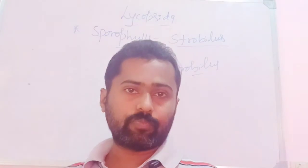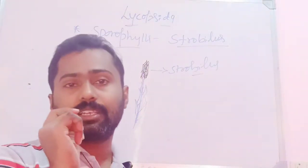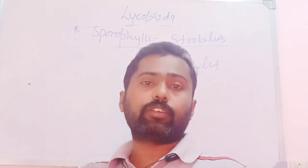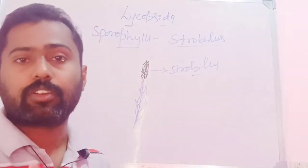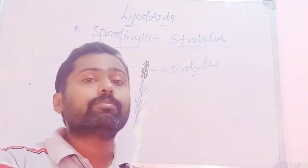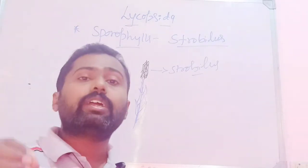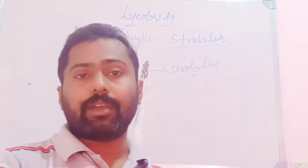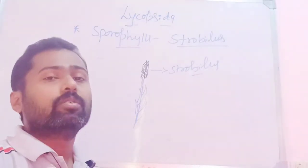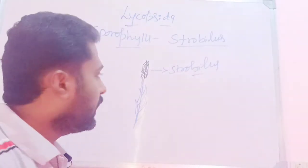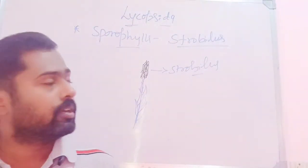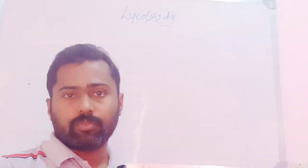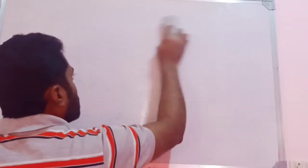Heterospory was first reported in Selaginella — this is very important from an evolutionary point of view, as gymnosperms and angiosperms are also heterosporous. Heterospory is the basis for seed habit, which evolved in gymnosperms and angiosperms. The stele in Lycopsida members is also protostele.